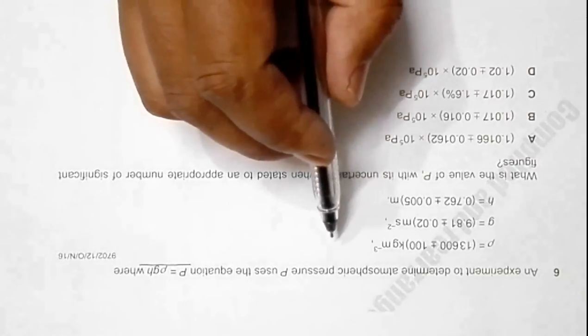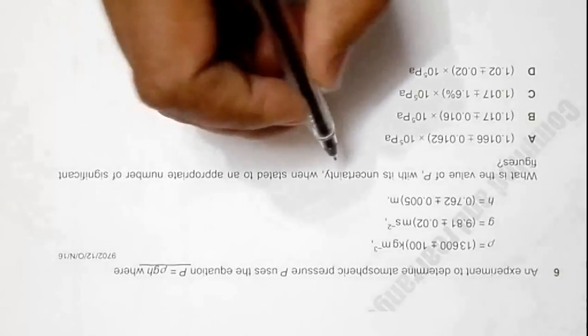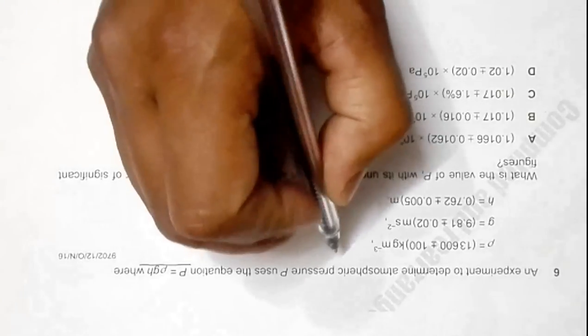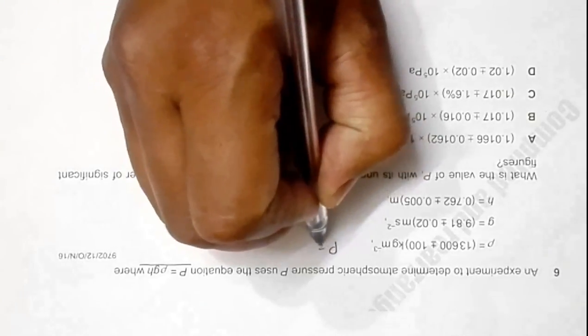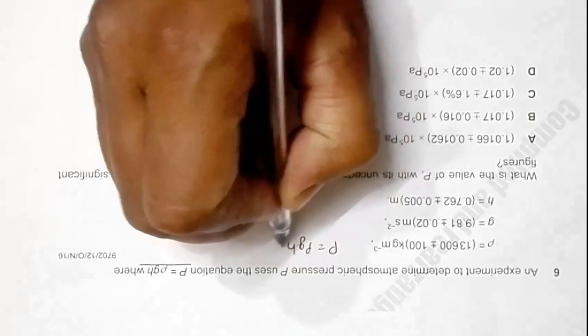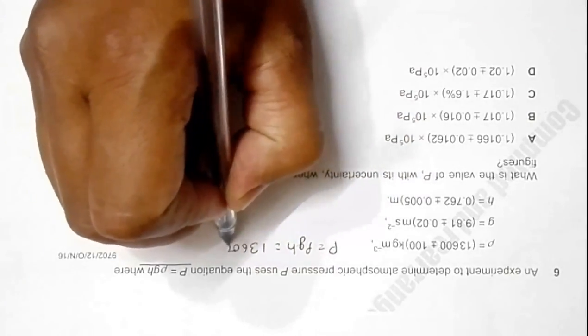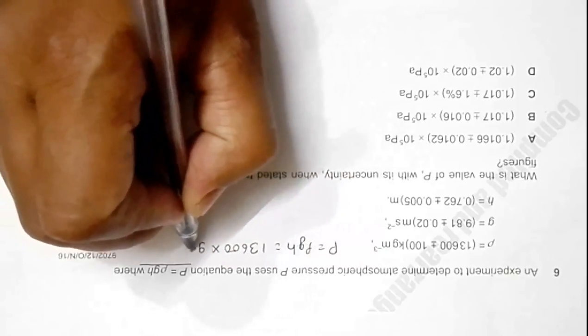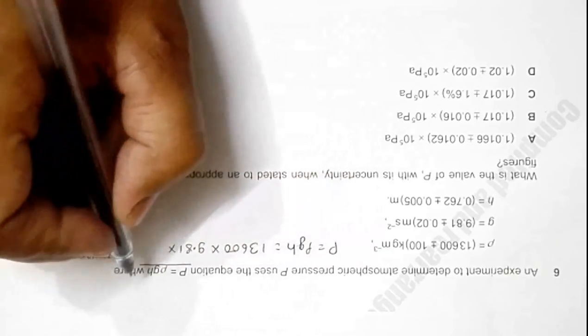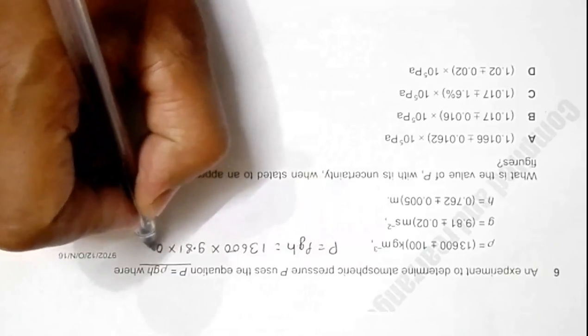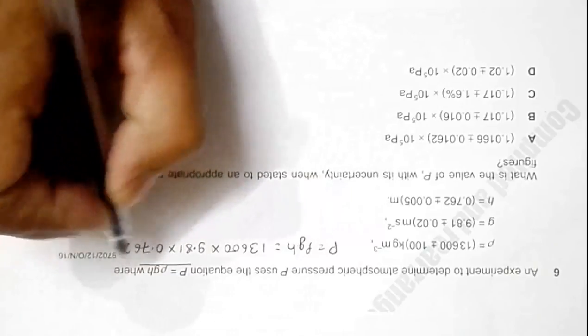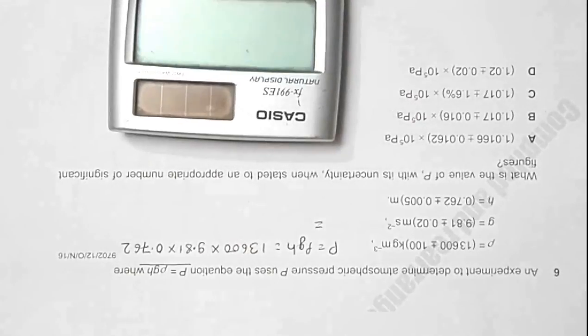First, let's find the value of P. P equals ρGH, which should be equal to 13,600 into 9.81 into 0.762. When I multiply it, the value will be equal to 13,600 into 9.81 into 0.762.